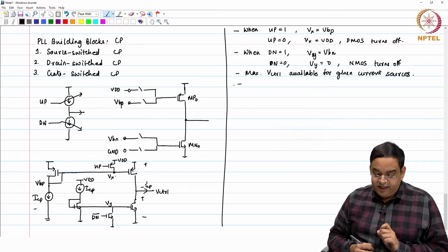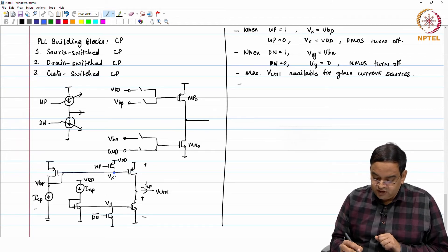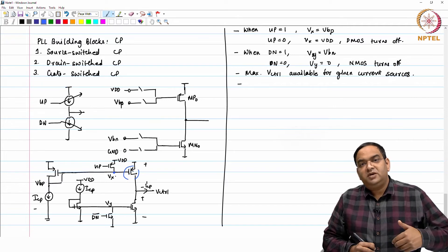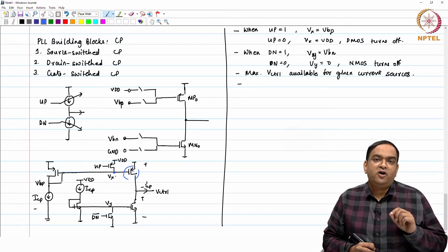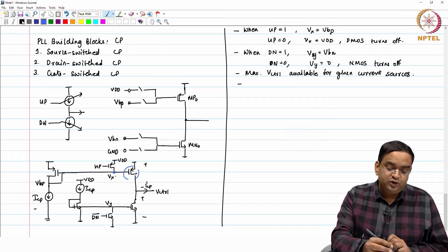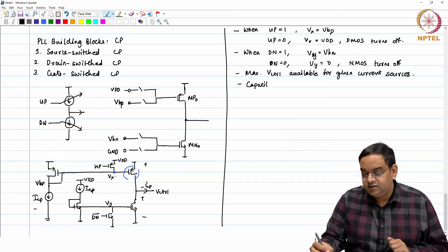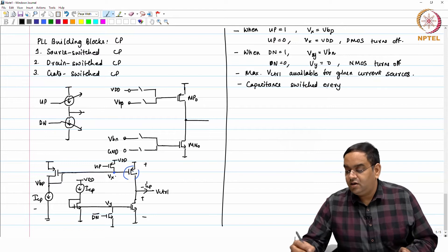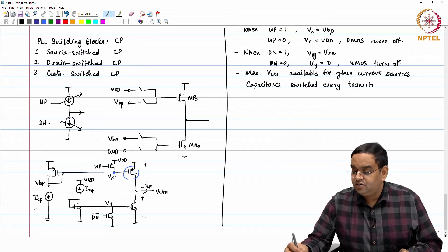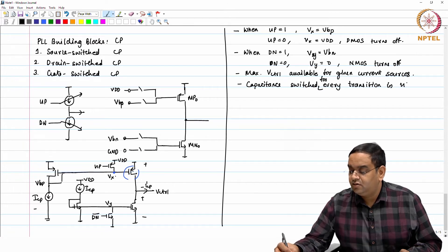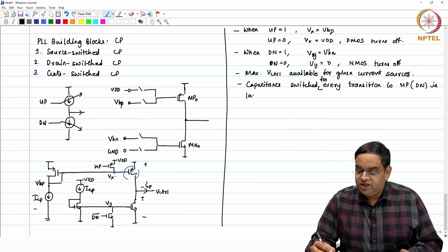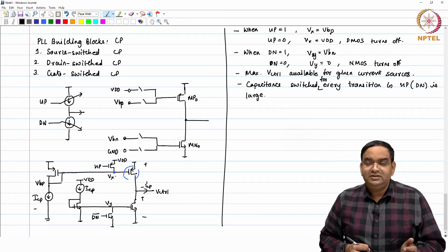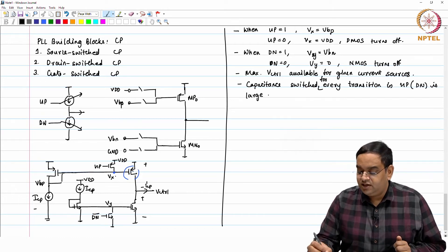Then there is a bad part of this is that the capacitance which you are going to see at this node because this is the gate of the PMOS transistor. Every time you are switching on or off the gate of the PMOS current source. The capacitance switched every transition in up and down is large, which in turn leads to large transition delays from up to the current source. This is large which leads to large transition delays.